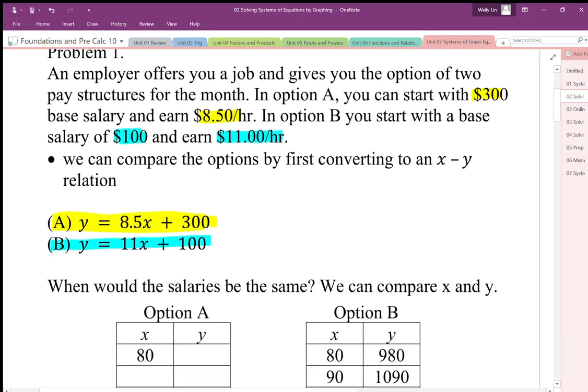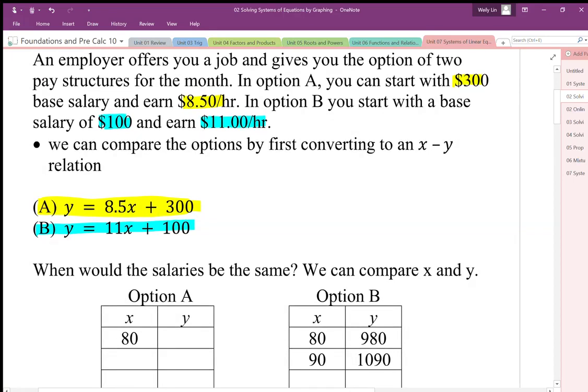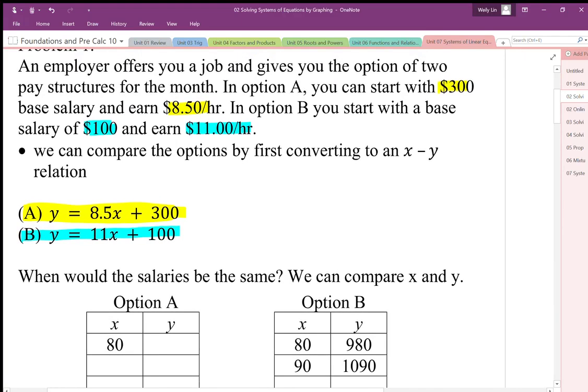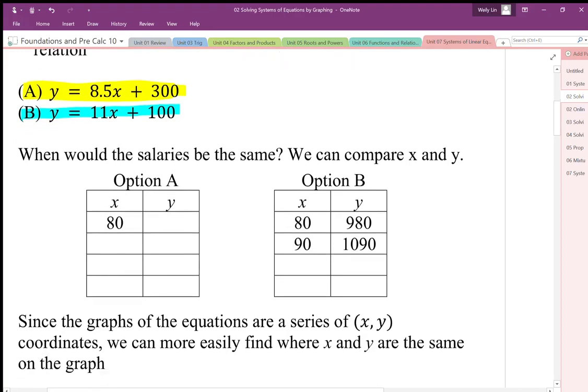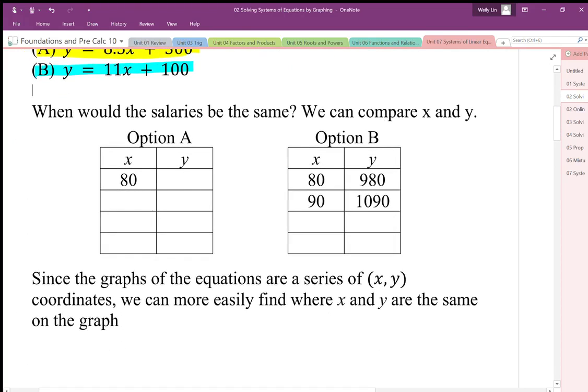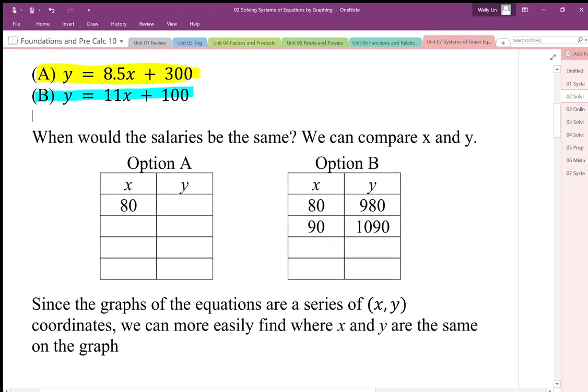So what we're looking for is we want to compare these two options, at what point are these salaries going to be the same. The assumption then would be that if we know when the pay is the same, if we work more hours than that equivalence, we probably want to select the higher pay per hour. But if we don't work that many hours, or we don't work as many hours as when they are equal to each other, we would probably take the first option since we start with more money. We can just calculate this and we can plug table of values in and see when the options are the same, or when one is getting paid more than the other.